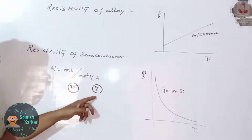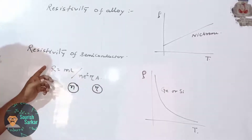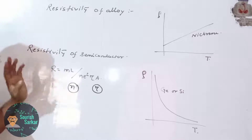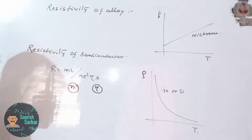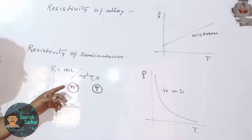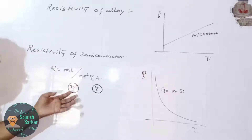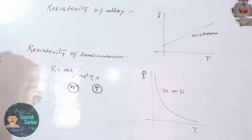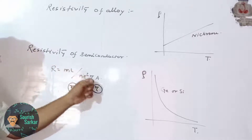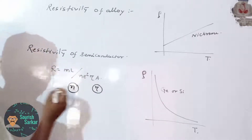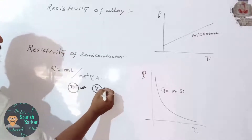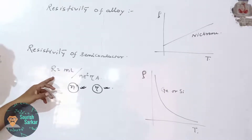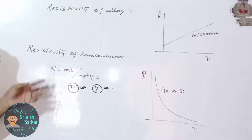With the increase in n, resistance decreases, but with the decrease in tau, resistance increases. Actually, the increase in n is very much larger in comparison to the decrease in tau in a semiconductor with a certain rise in temperature. That is why the factor n is more effective than the factor tau.